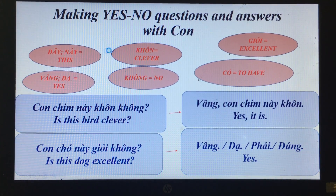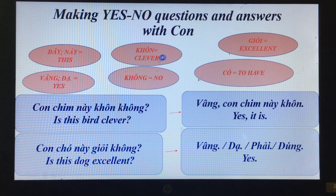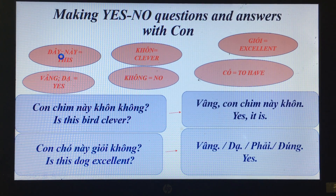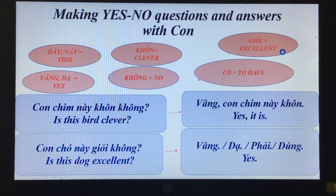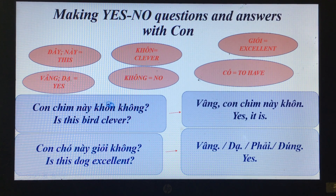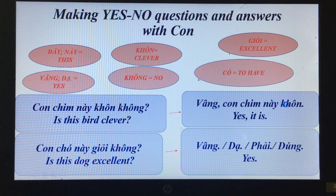More vocabulary: 'khôn' means clever, 'giỏi' means excellent, 'có' means to have, 'không' means no. 'Con chim này khôn không?' — Is this bird clever? 'Vâng, con chim này khôn.' — Yes, it is clever.